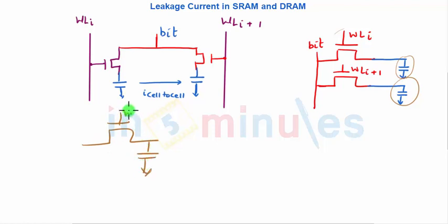This is the word line, this is my bit line. Suppose my word line was high and my capacitor was charged to VDD. Now my word line has gone low, then this capacitor should be able to store its charge.